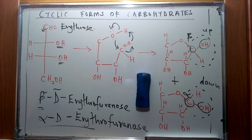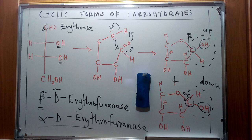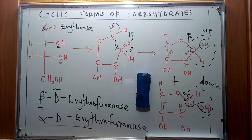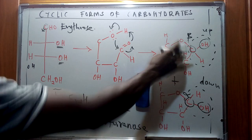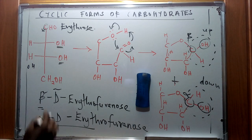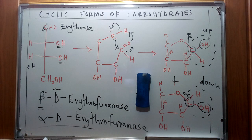There is a specific characteristic for Haworth structures: groups of atoms that face the right on the Fischer projection will always face down on the Haworth structure, giving the alpha representation, while those that face left will face up on the Haworth structure. Therefore if the OH group is represented on the left, it will have a preference for the beta-D-erythrofuranose designation. There's also a concept of rotation that we'll consider when discussing Haworth structures in a different video.